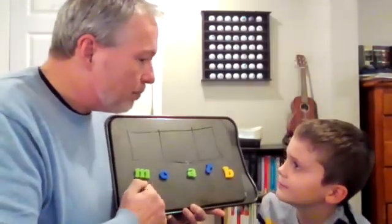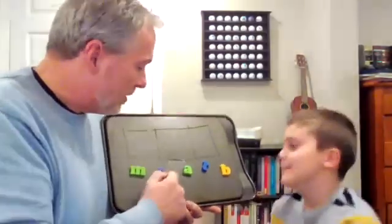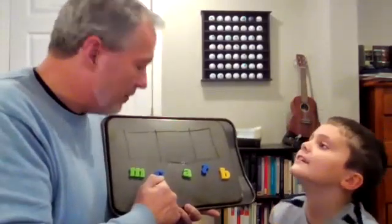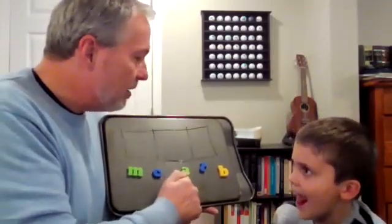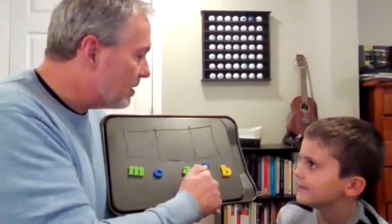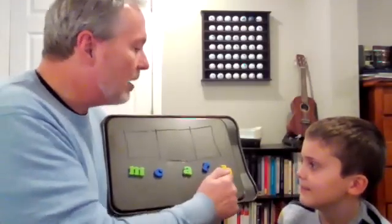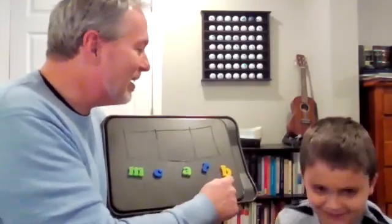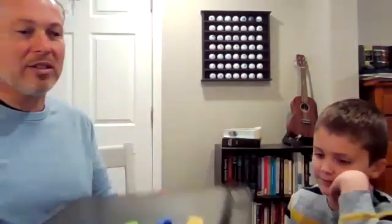So this is M. M says mmm, what sound? Mmm. This is C. C says cuh, what sound? Cuh. Very good. This is A. A says ah, what sound? Ah. Good. This is T. T says tuh, what sound? Tuh. Good. And this is B. Let me say it first. This is B. B says buh, what sound? Buh. Good. See, AJ already knows his letters and their sounds.